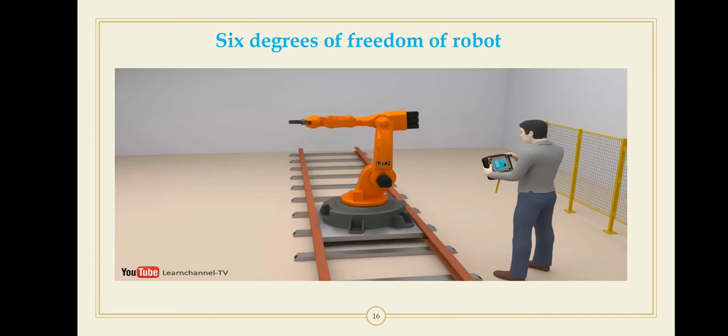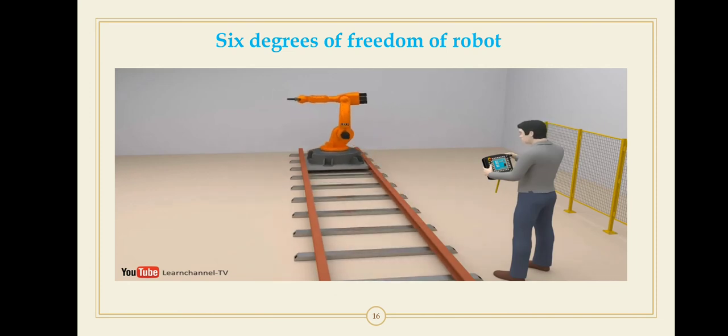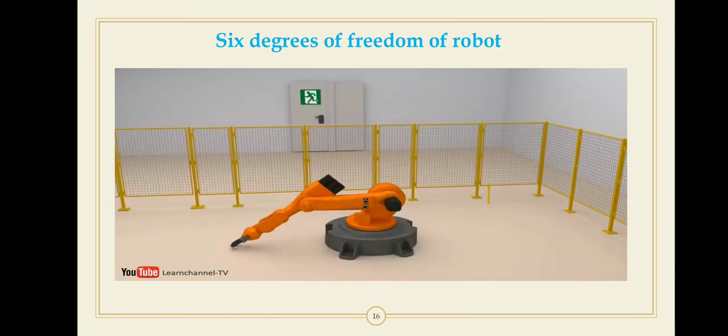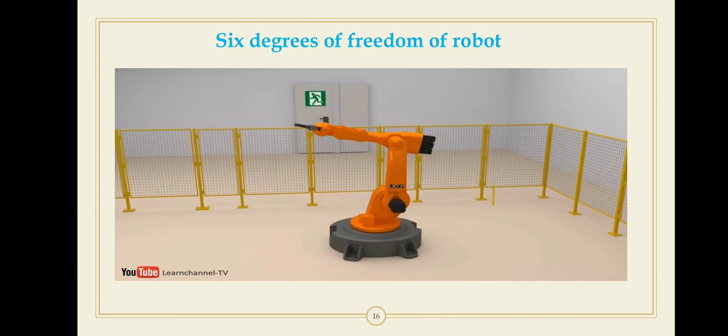If the robot slides along a track, it would have a further degree of freedom in form of a linear movement. The work envelope can be described as spherical.